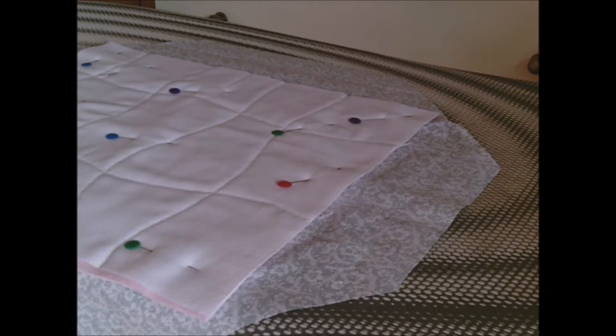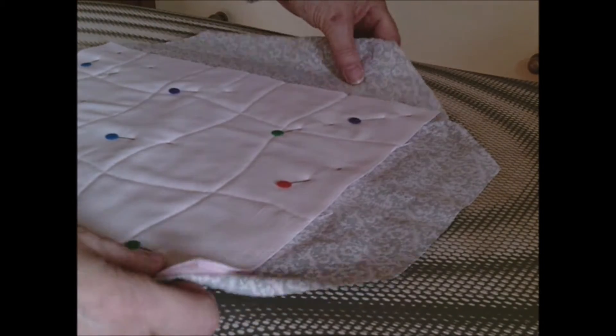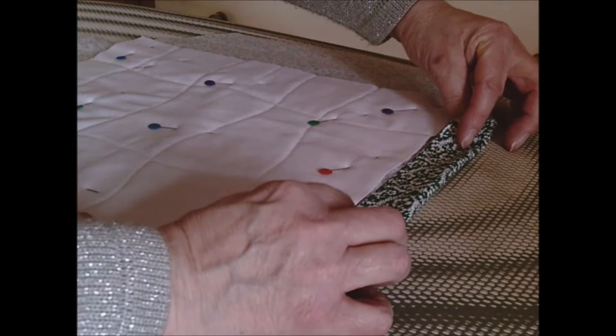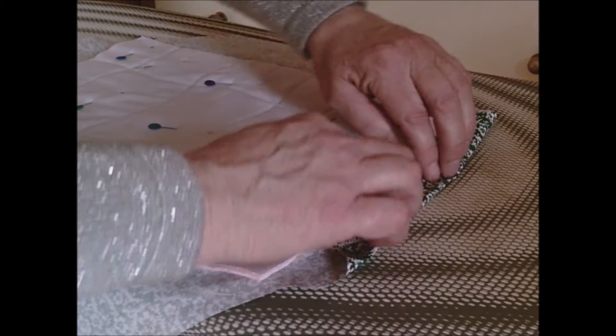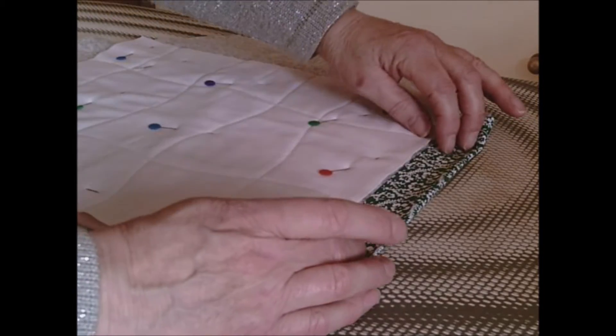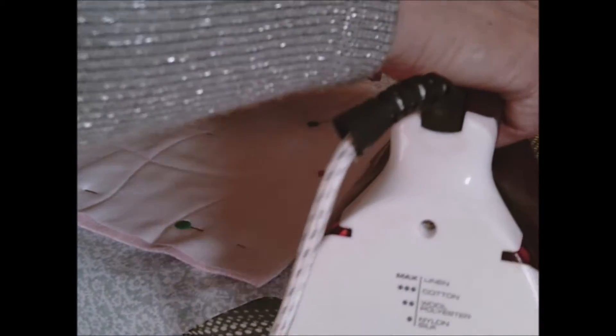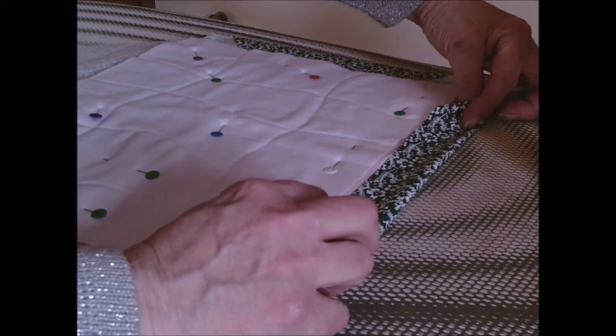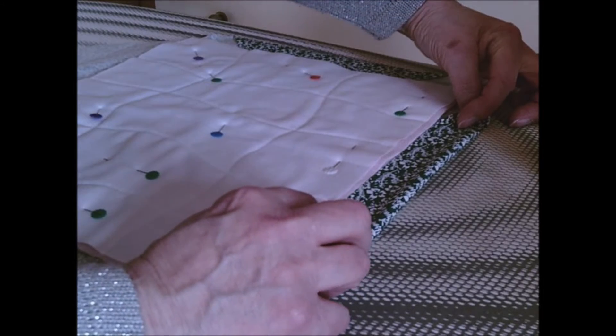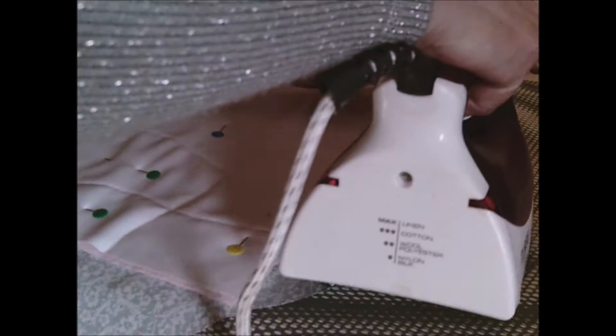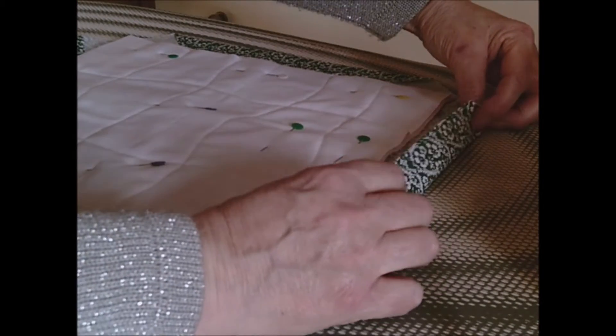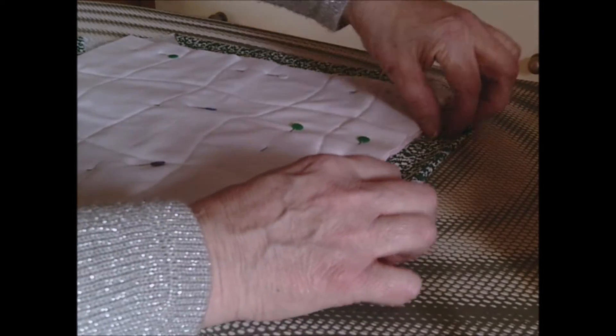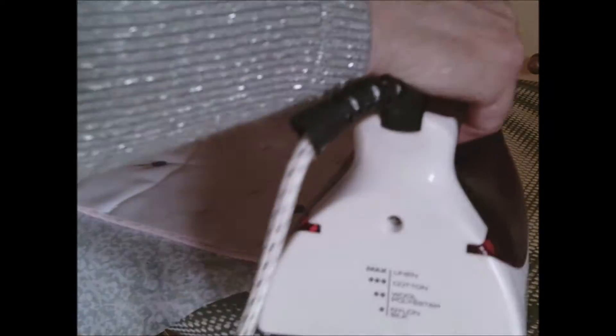Now we're on the ironing table. What we need to do now is turn over and press. Turn all the edges, fold over into the edge and press. Turn around, fold over into the edge and press. Keep doing that until all four sides are turned and pressed.